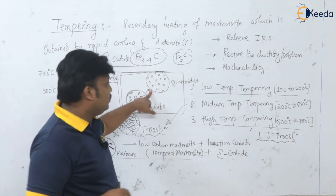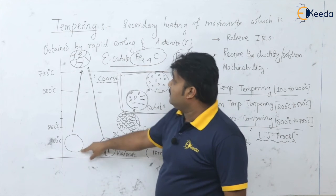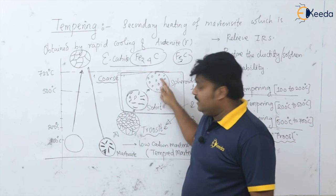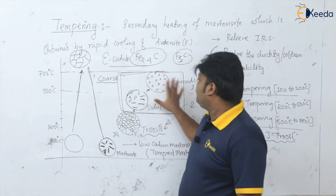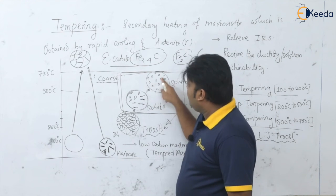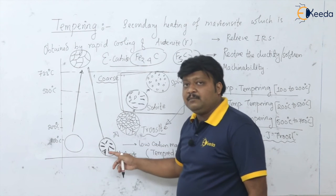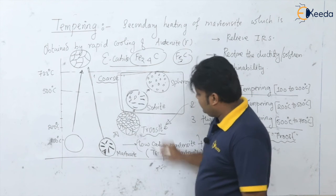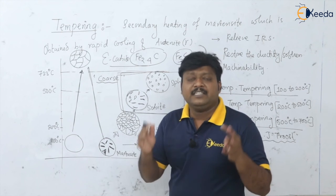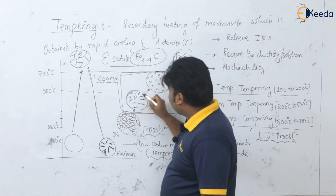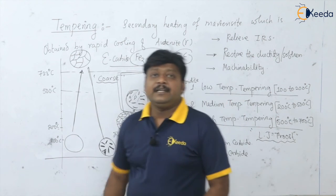To summarize, tempering is nothing but the secondary heating of martensite obtained by rapid cooling of austenite. We have three temperature ranges: 100 to 200, 200 to 500, and 500 to 700 degrees centigrade, giving structures of troostite, sorbite, and spheroidite. The difference between these structures is only the change in cementite particle sizes — the rest of the structure is tempered martensite throughout. Please remember: there is no structural change in the martensite matrix, only the cementite particle size varies.